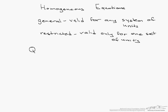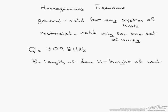Let's look at an equation for volumetric flow rate over a dam, where b is the length of the dam and h is the height of the water. The first question is: is 3.09 dimensionless or does it have units?